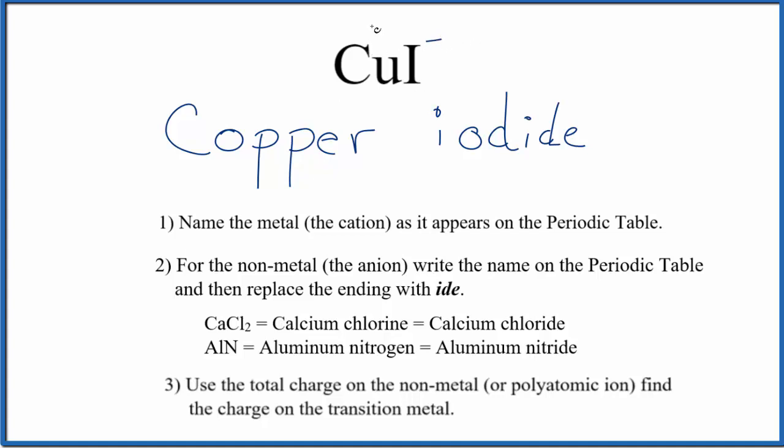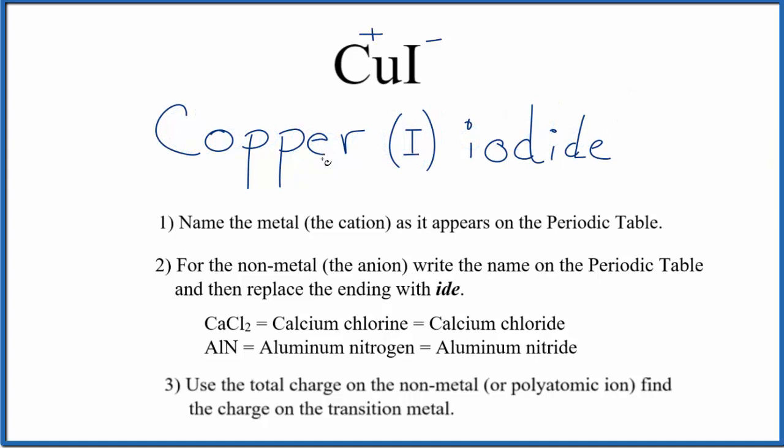So we have one minus for iodine, copper has to be one plus. We'll put Roman numerals with the number one between the names. So the name for CuI is copper (I) iodide.